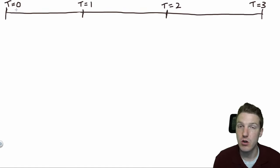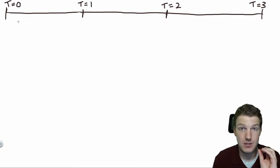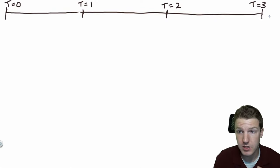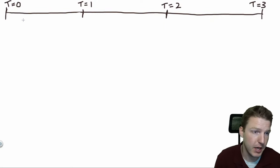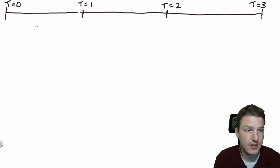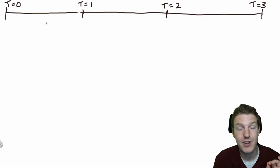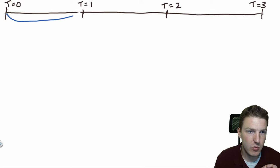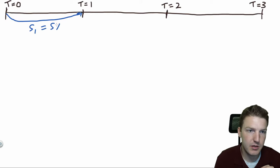We're starting at T equals zero, so that means today. T equals one would be one year from today. T equals two would be two years from today. T equals three is three years from today. T is time. So if you wanted to lend money to someone today for one year, that would be the spot rate, and we'll call that S1. Let's say that rate is equal to 5%.